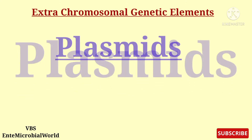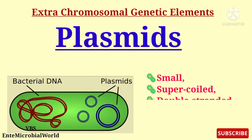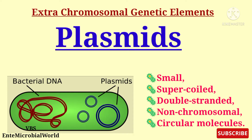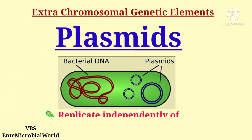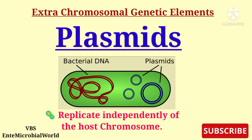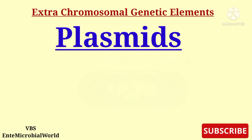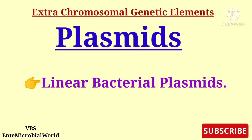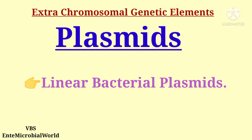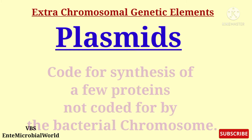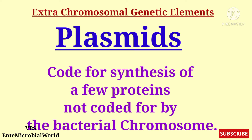Plasmids are small, supercoiled, double-stranded, non-chromosomal circular molecules present in the cytoplasm of bacteria. Plasmids replicate independently of the host chromosome. Note that some plasmids have linear DNA — linear bacterial plasmids have been identified in several species of spirochete bacteria. Plasmids code for synthesis of a few proteins not coded for by the bacterial chromosome.